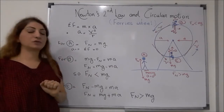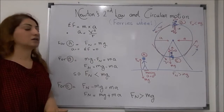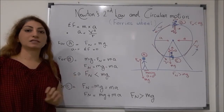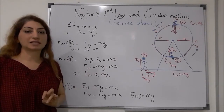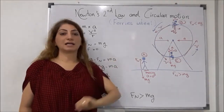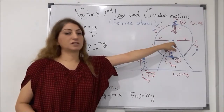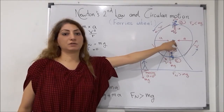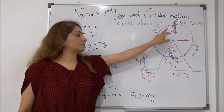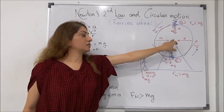The first thing to know is that the sum of the forces equals M times A — mass times acceleration. The acceleration vector direction is pointing toward the center of the circle, from the object to the center of the circular path.